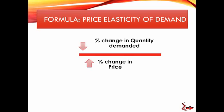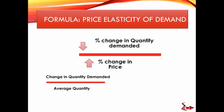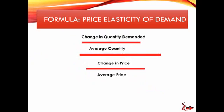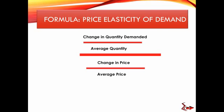Now let's put this into a formula. Price elasticity of demand is the percentage change in quantity demanded divided by the percentage change in price. The percentage change in quantity demanded is the change in quantity divided by the average quantity. Similarly, the percentage change in price is the change in price divided by the average price. Substituting these gives you the formula for price elasticity of demand.